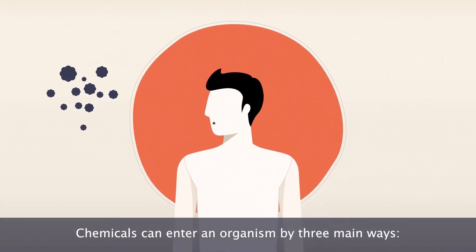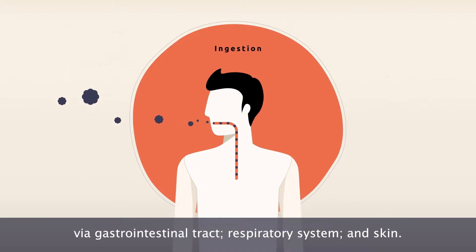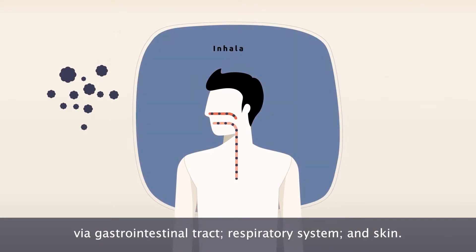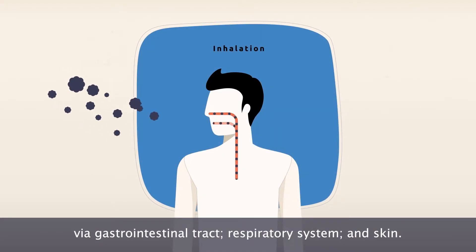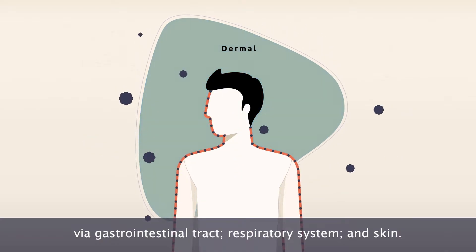Chemicals can enter an organism by three main ways: via the gastrointestinal tract, respiratory system, and skin.